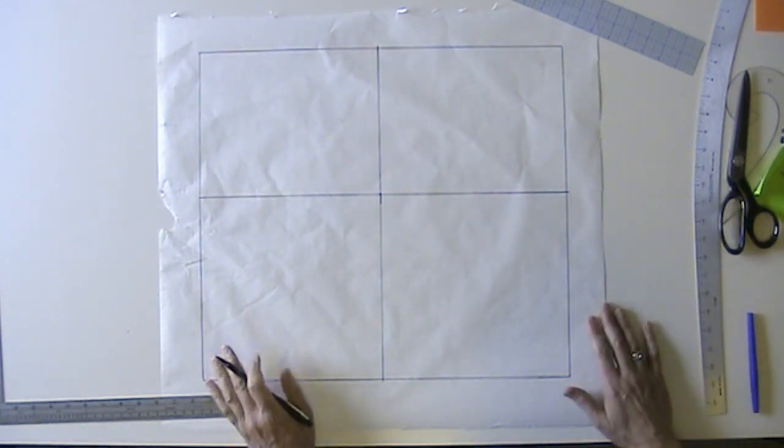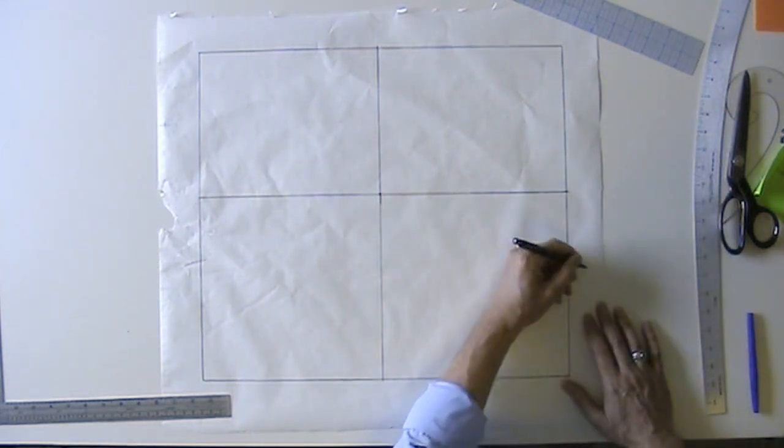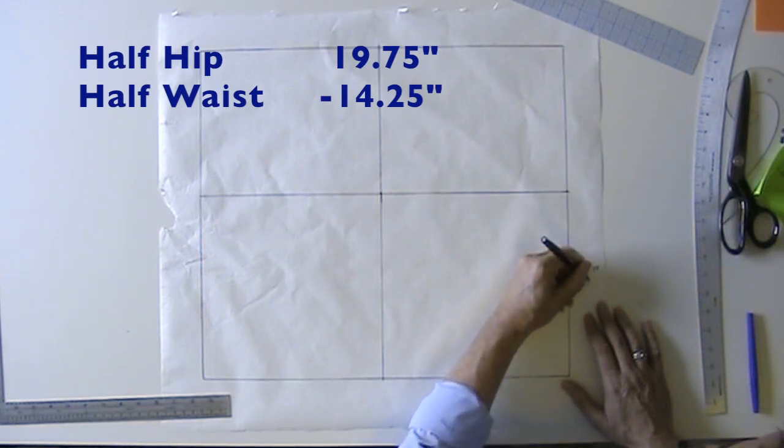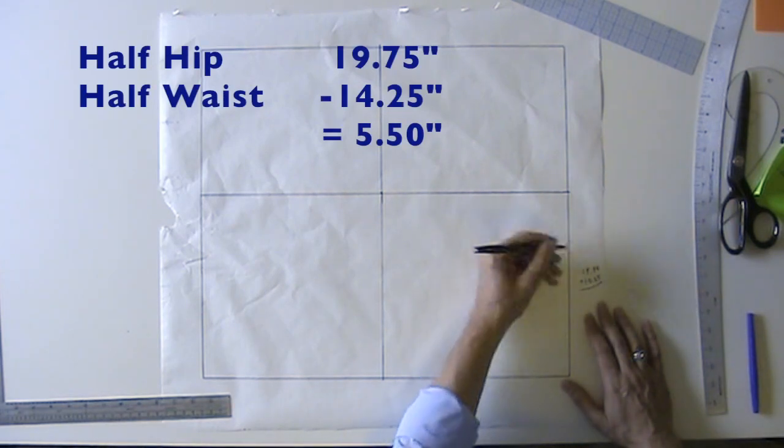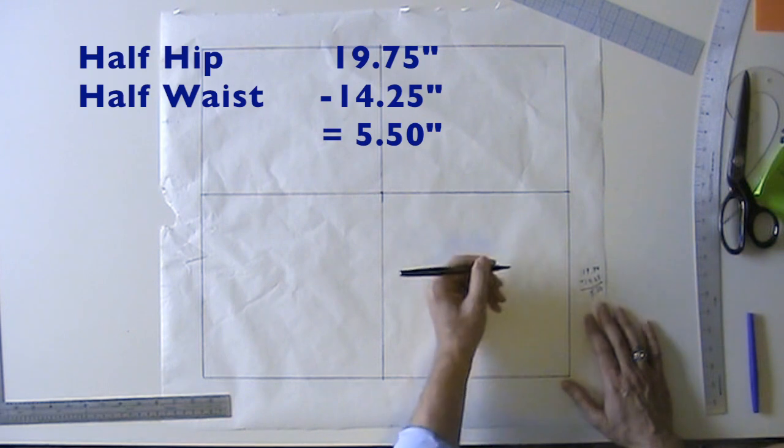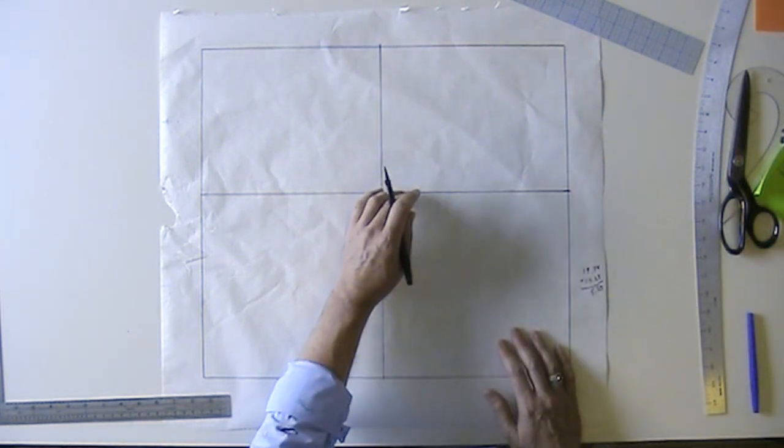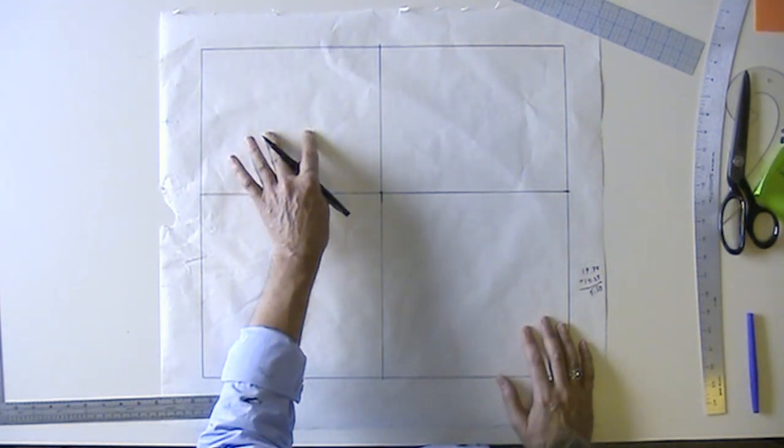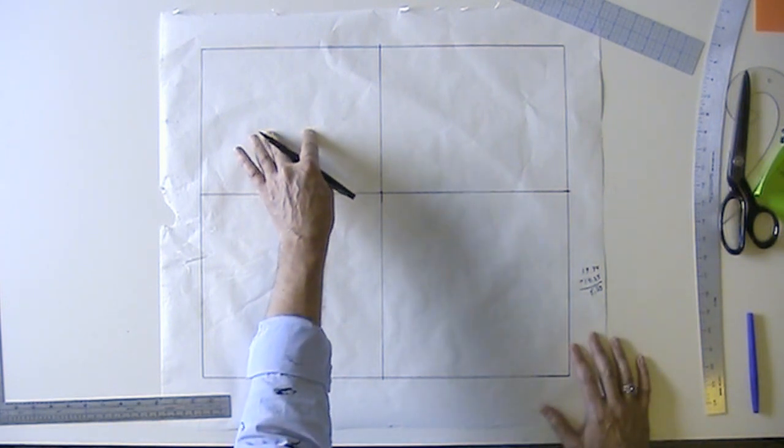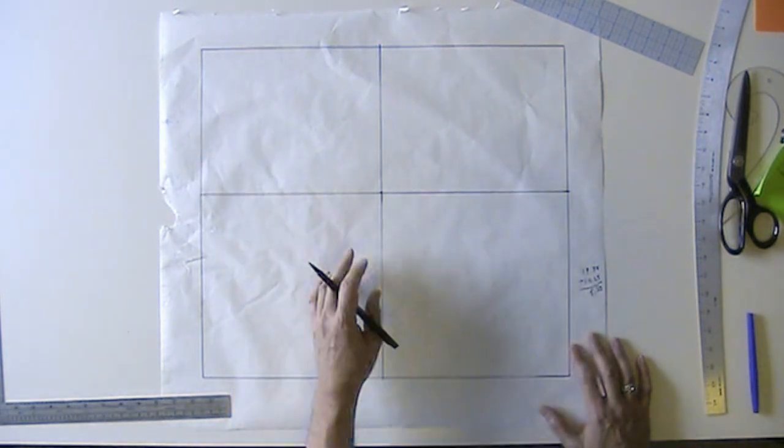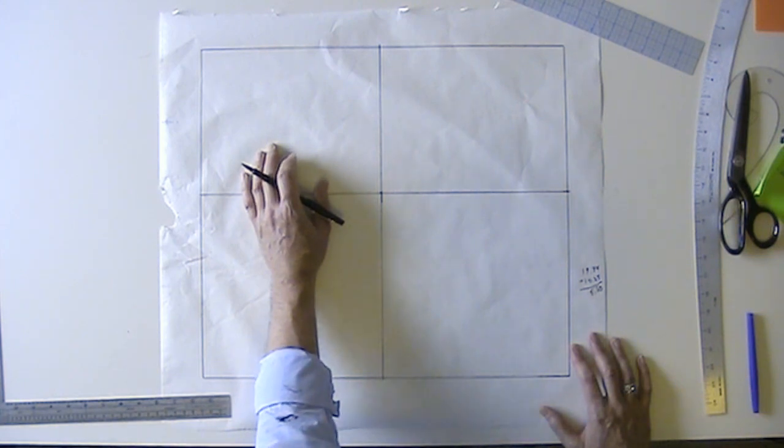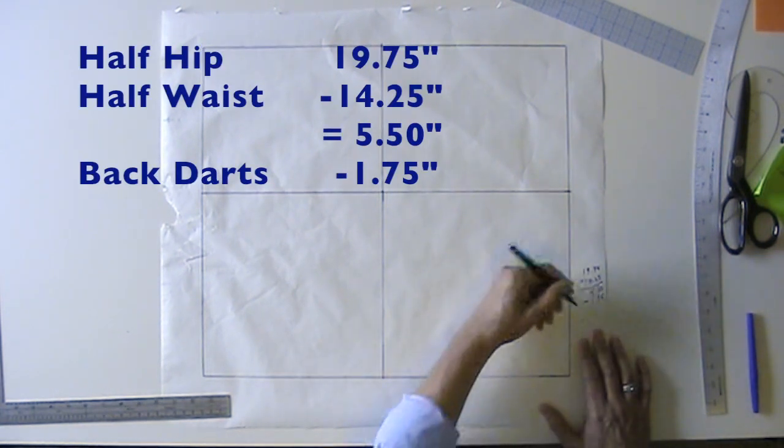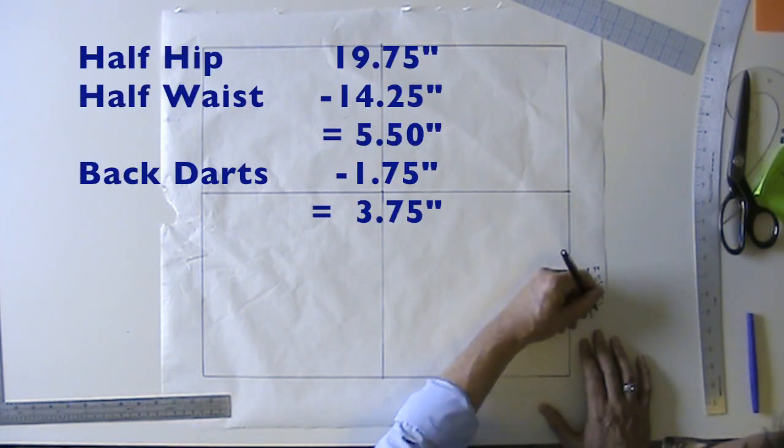Now just like before we'll need to do some math. We need to take our half hip measurement which in this case is 19 and 3/4 and subtract our half waist measurement which in this case is 14 and 1/4. Which leaves me with 5 and 1/2 inches. That's how much we need to take out of the waist to reach our finished waist measurement. Now I'm going to put 2 darts in the back and I'm going to make them each 7/8 inches deep. It can be as much as an inch or less than that, but I'm going to start with 7/8 inches. So 2 darts at 7/8 inches is going to give me a total of 1 and 3/4 inches. Subtracting that, that leaves me with 3 and 3/4.